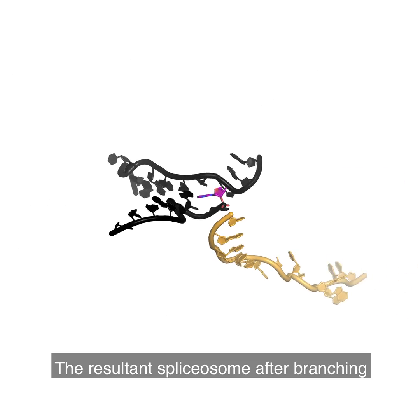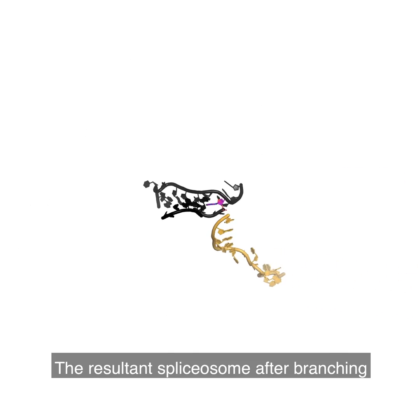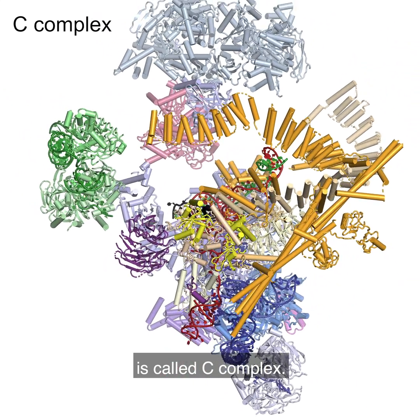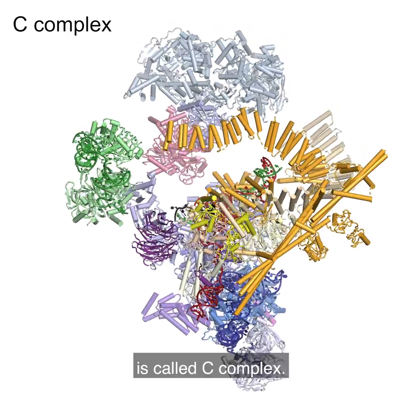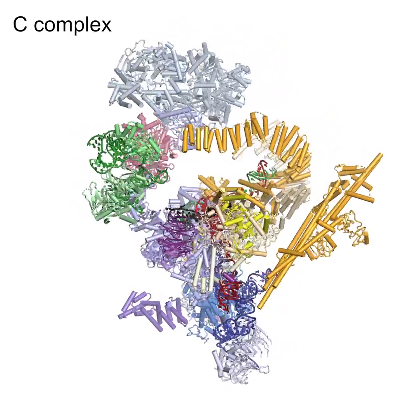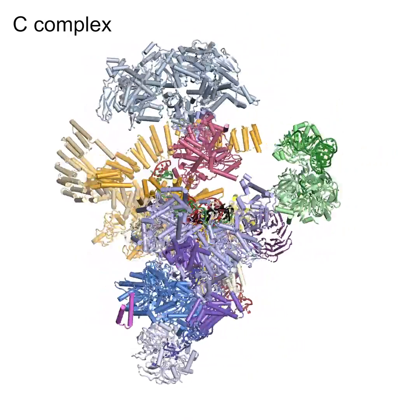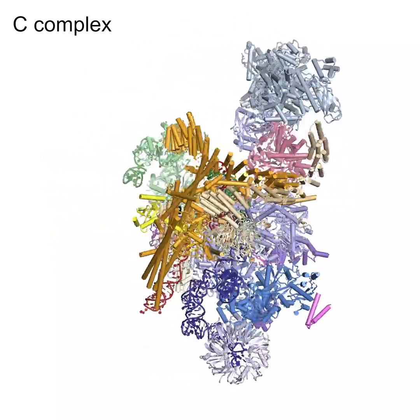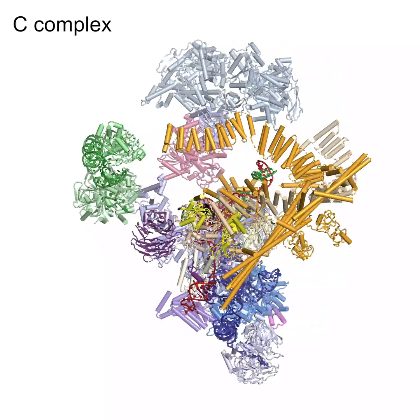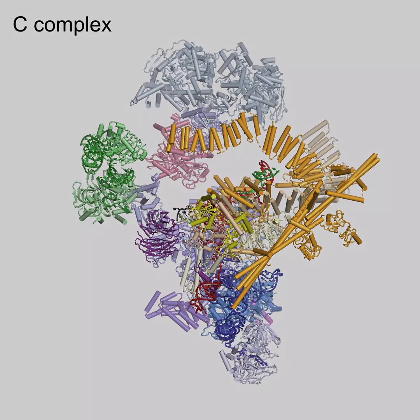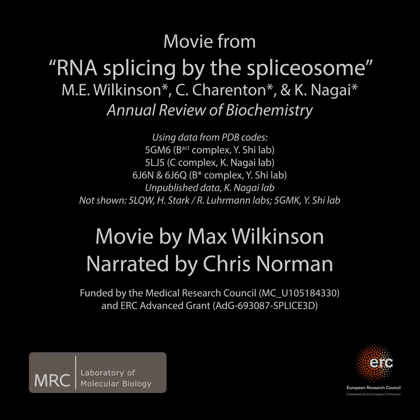The resultant spliceosome after branching is called C-complex.